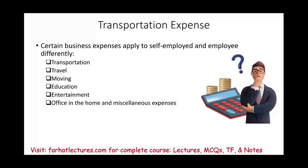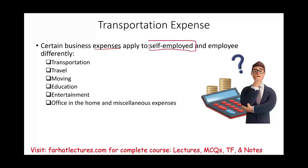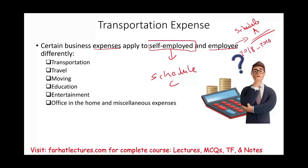Hello and welcome to this session in which we'll discuss the concept of transportation expense. In the prior session, we differentiated between the deductions or expenses for self-employed individuals and employees. Self-employed individuals are basically independent contractors — they deduct those expenses on Schedule C. If you're an employee and you incur some of these expenses, they are deducted on Schedule A. The miscellaneous itemized deductions are suspended from year 2018 to year 2025. So in this session, we'll focus specifically on transportation expense to see how a self-employed individual will deduct those on Schedule C and how an employee would deduct those on Schedule A starting year 2026.